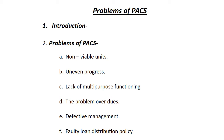The third problem is lack of multipurpose functioning. PACS should work as a multipurpose cooperative society, meaning PACS should provide credit facilities, storage facilities, fertilizers and seeds, and proper guidance to the farmers. PACS should also create human resources — staff that is able to provide technical as well as other services to rural people. But it does not happen in our country, and that is why, though we say PACS should work as a multipurpose cooperative society, it remains unfulfilled.